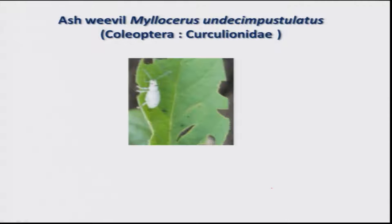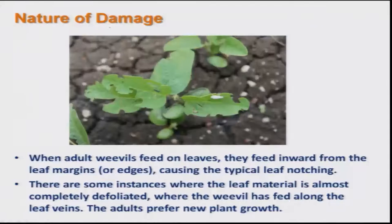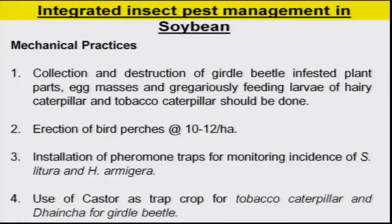There is also a leaf-eating Coleopteran insect. Particularly in the early stage, its damage is seen from the borders. Young seedlings of 15 to 20 days old will be totally defoliated, and we lose many plants — the field shows a gappy appearance as a result.